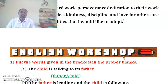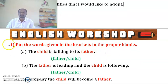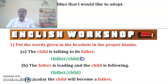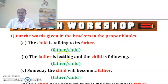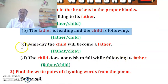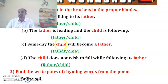These were the margin questions and now we start our English workshop. The first question: Put the words given in the brackets in the proper blank. I have already given the answers in bold red letters. The two options for each question are: (1) the child is talking to its father; (2) the father is leading and the child is following; (3) someday the child will become a father; (4) the child does not wish to fall while following its father.